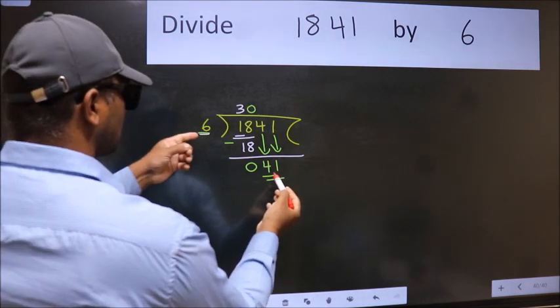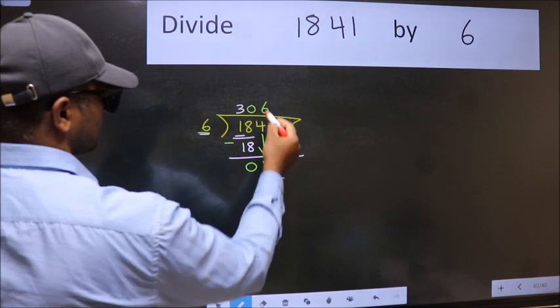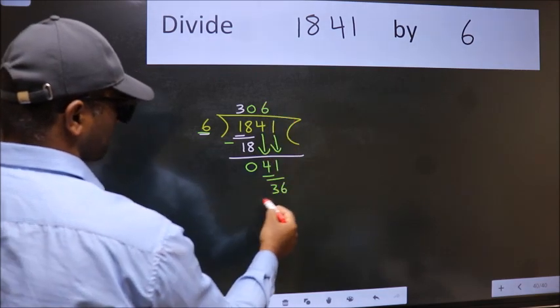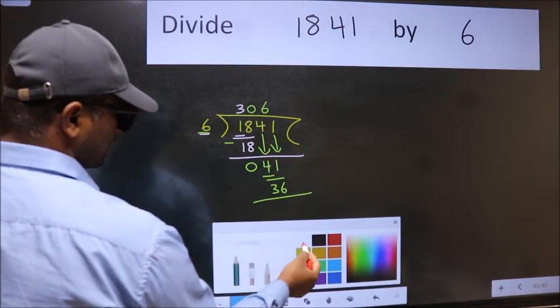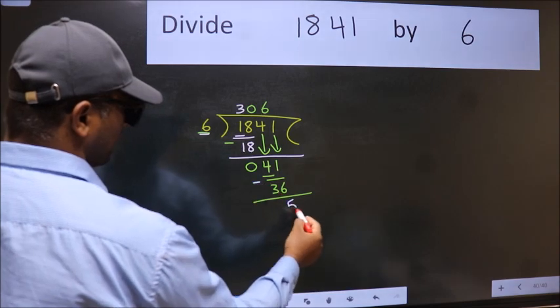A number close to 41 in 6 table is 6 sixes, 36. Now we subtract. We get 5.